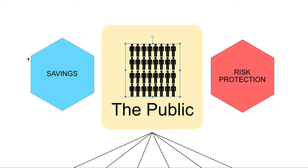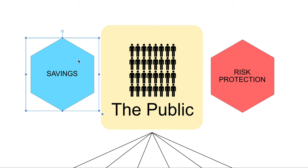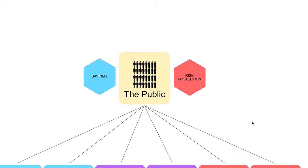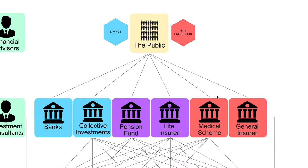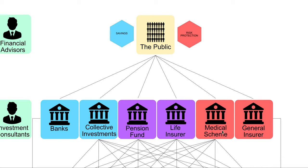So the public has got these two needs: risk protection and savings. And they found that by combining together, they can create certain products, and when they combine together and someone creates a product, an institution is formed. I want to look at the six institutions that get formed when people group together. The red ones cover risk protection, the blue ones cover savings, and the purple ones have a savings component and a risk protection component. There are six types of institutional investors.